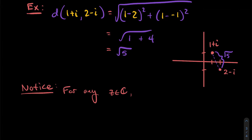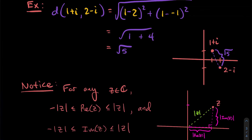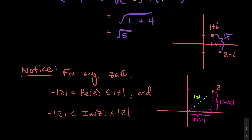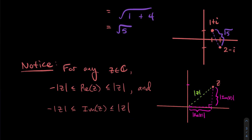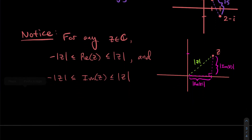Some useful fun facts about the distance function: the real part of z always satisfies −|z| ≤ Re(z) ≤ |z|, and similarly for the imaginary part. Geometrically, |z| is the hypotenuse of a right triangle, while the real and imaginary parts are the smaller legs. This holds regardless of which quadrant the point lives in — the absolute value is always the hypotenuse.